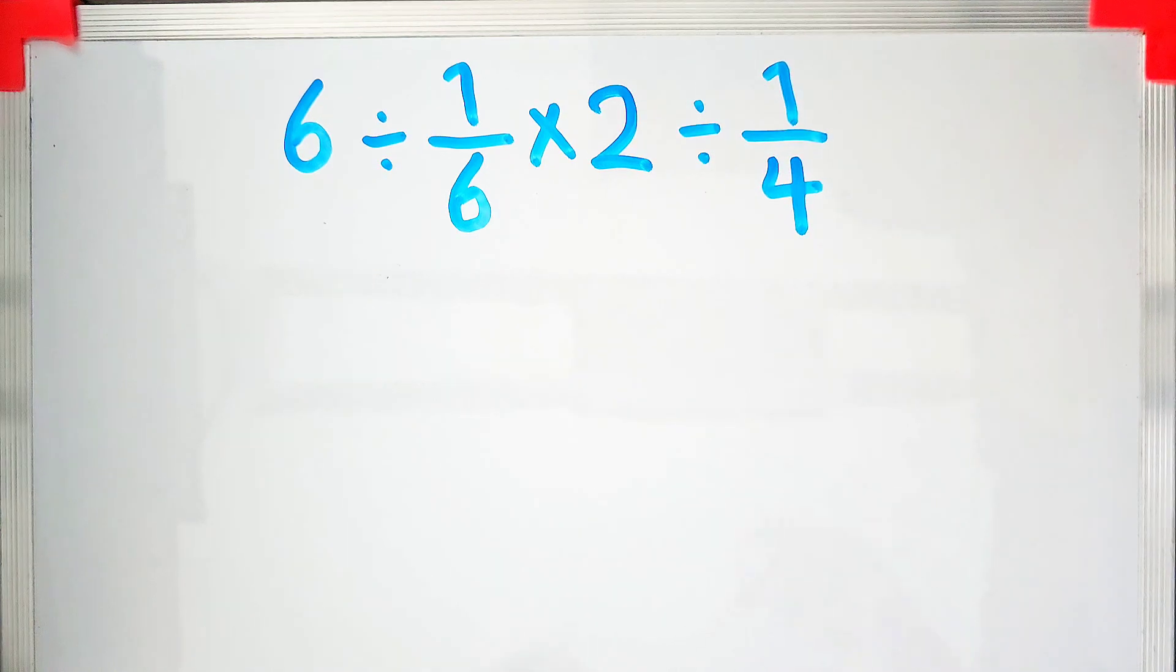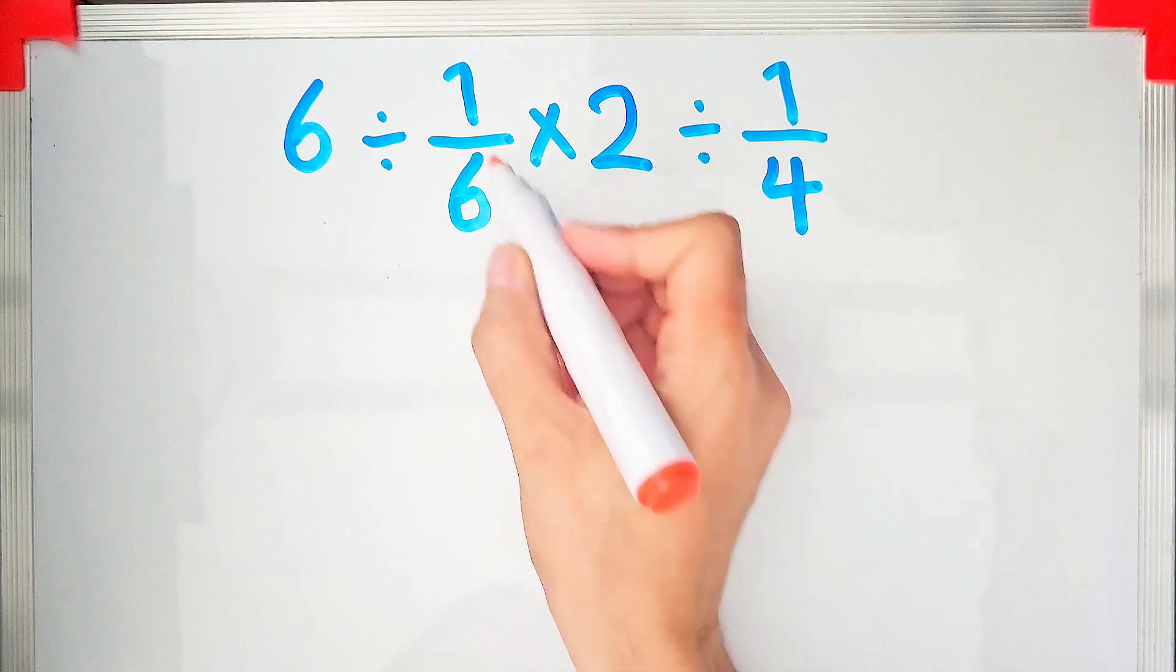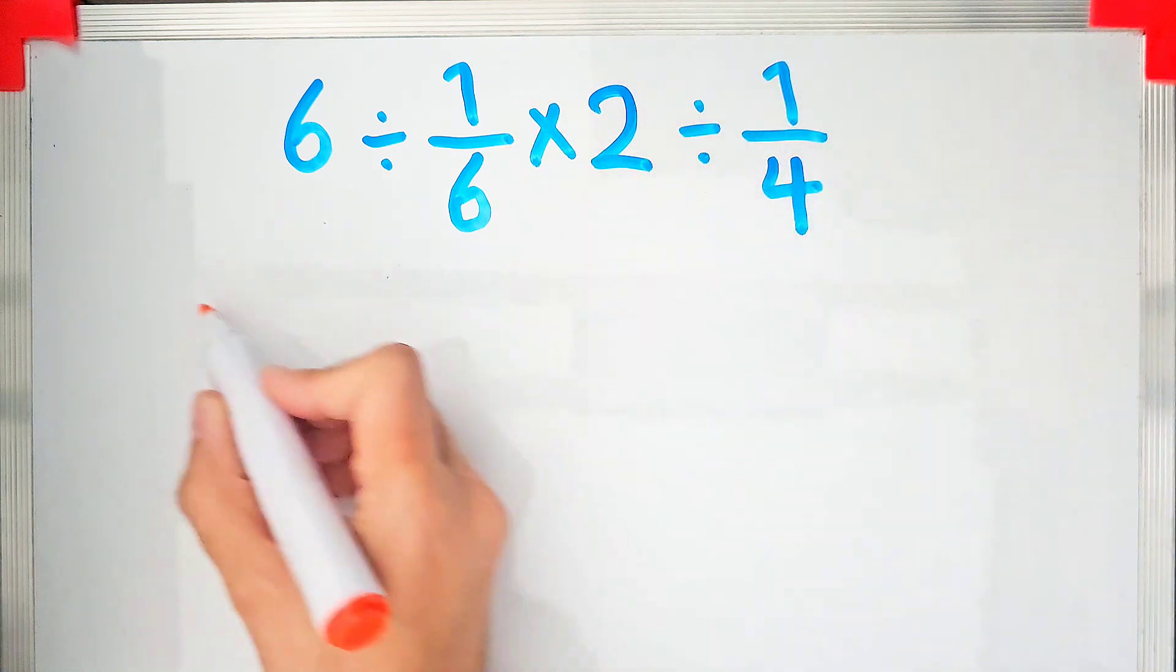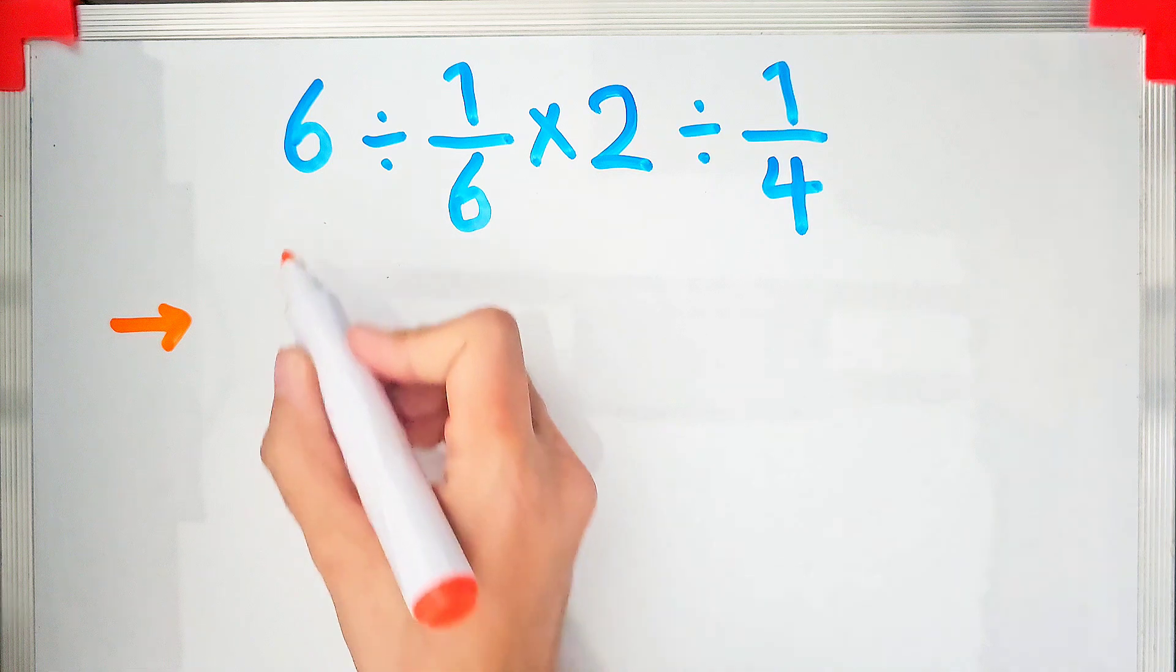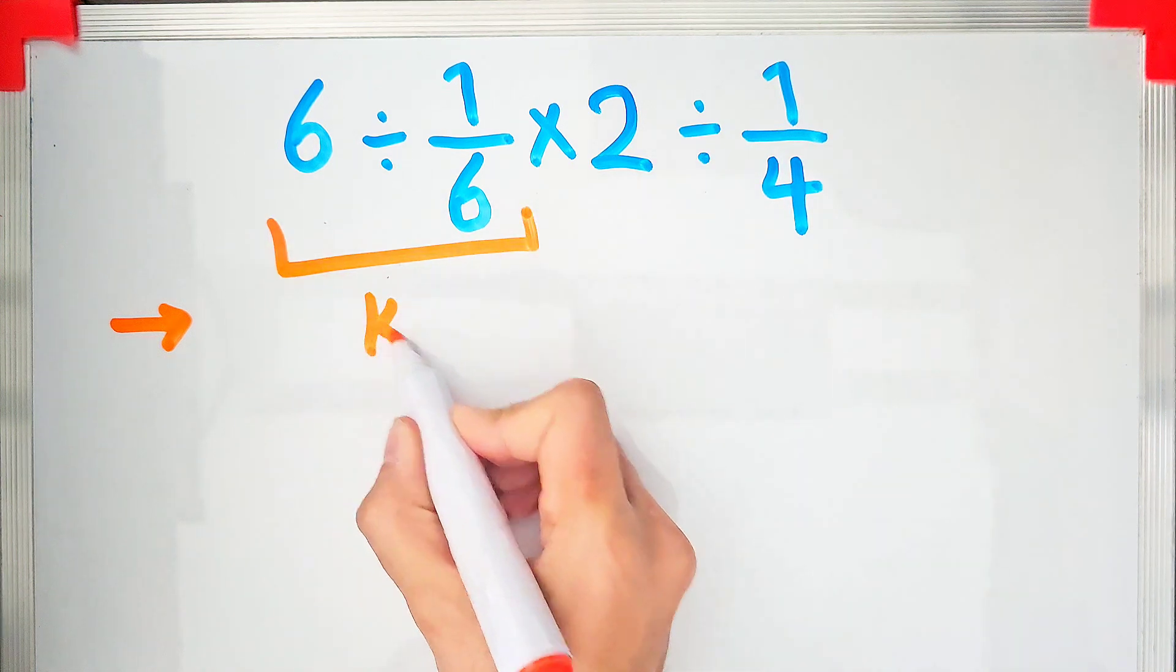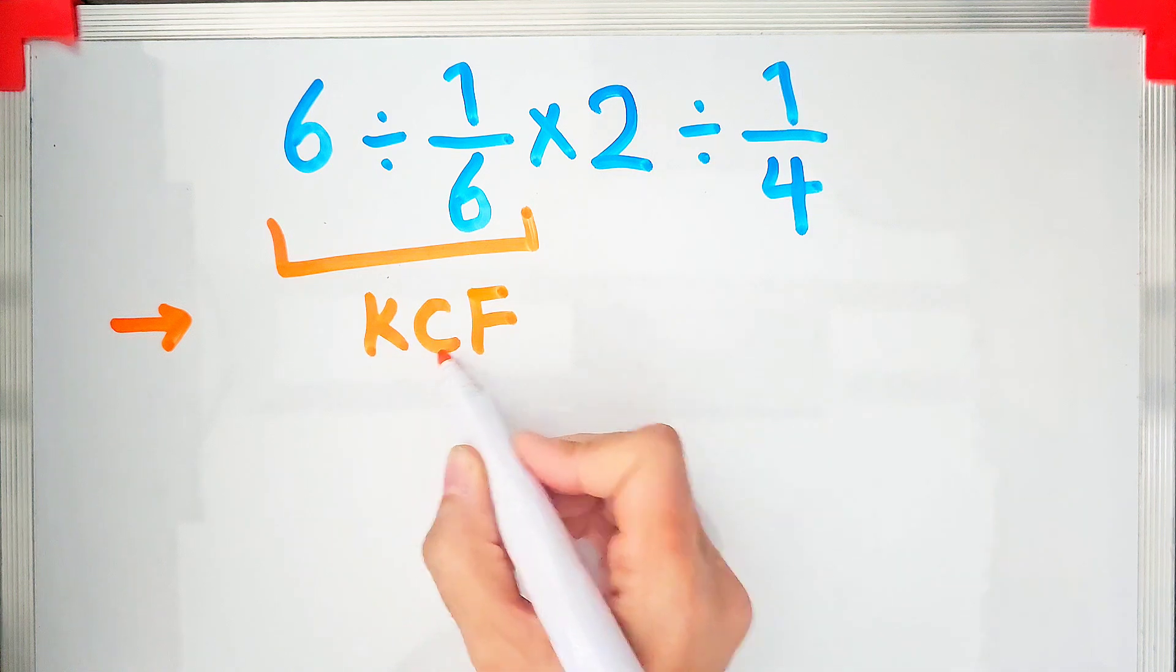In this question we have two divisions and one multiplication. Because the multiplication and division have the same priority, we start from the left and simplify. To solve the first part, we need to follow a rule that's called KCF: keep the first fractional number, change the sign, and flip the second fraction.